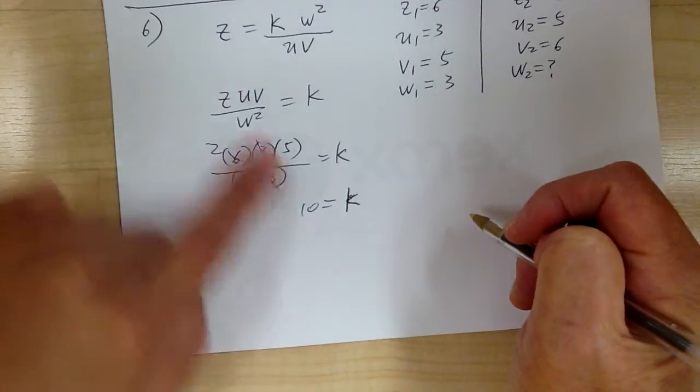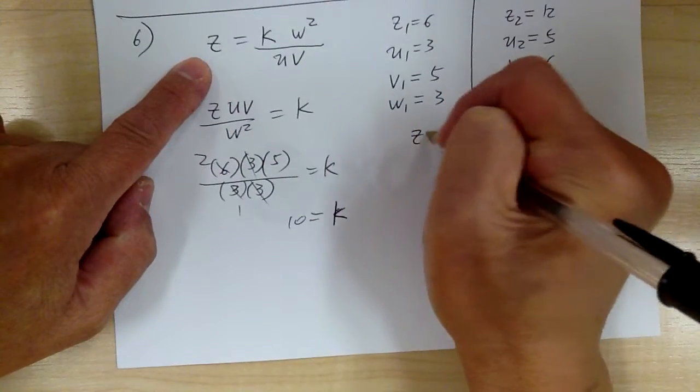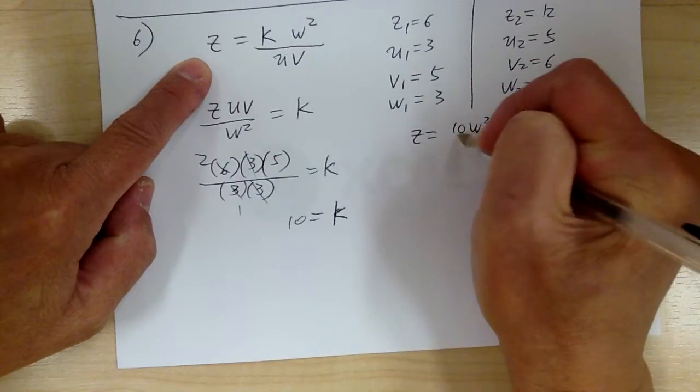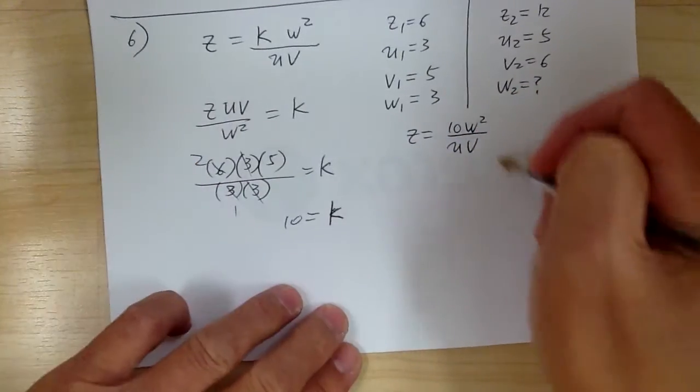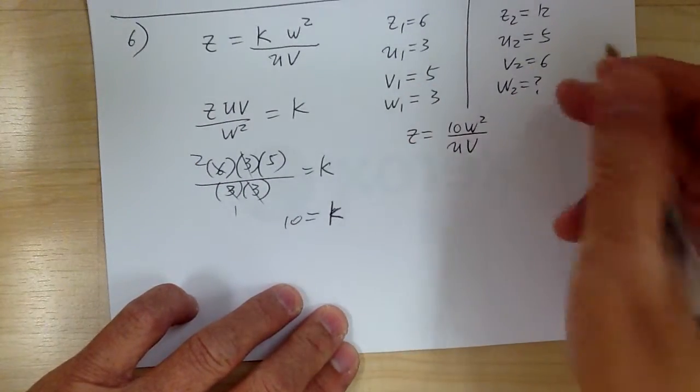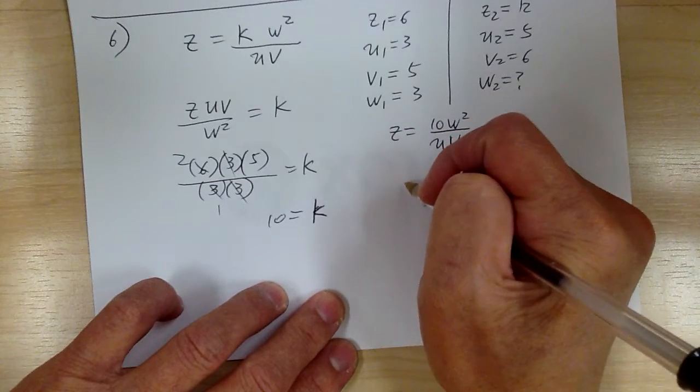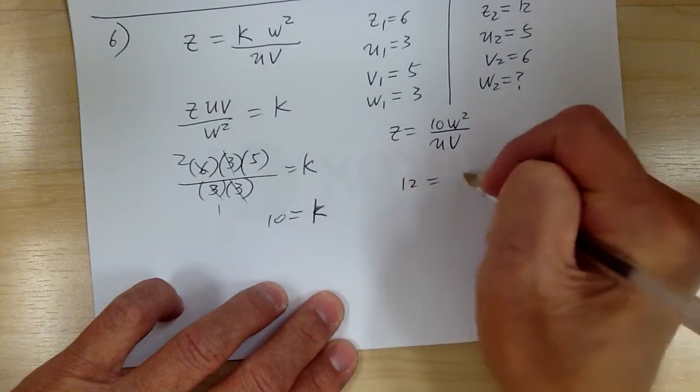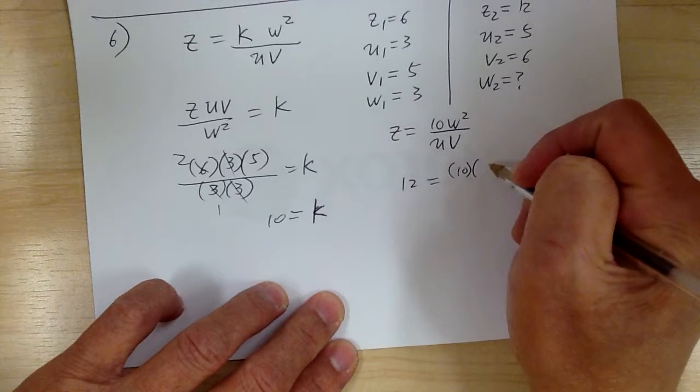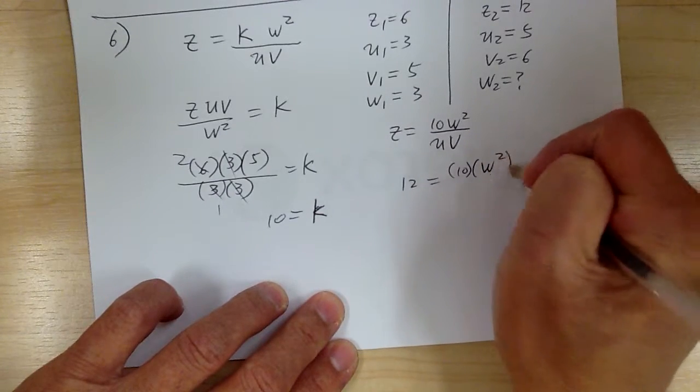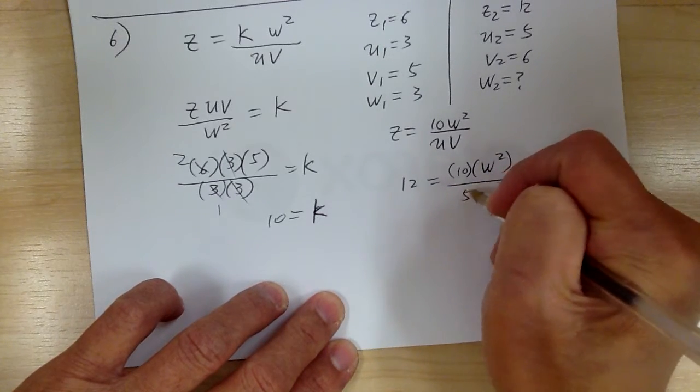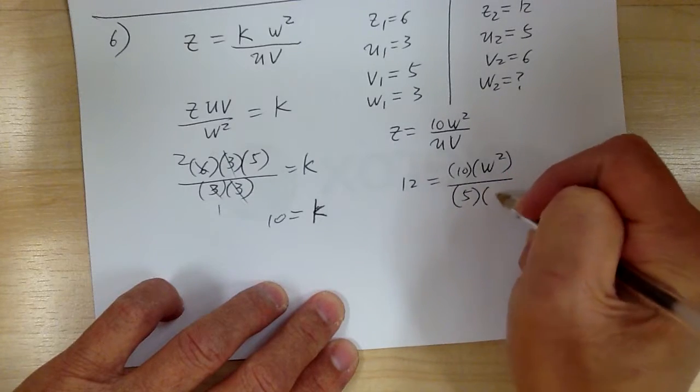So as soon as you find k, again, you update your equation. So you got z equal to 10 w squared over uv. So now you can use this formula to find what you're looking for. So you got 12 is equal to 10 times w squared over 5 times 6.